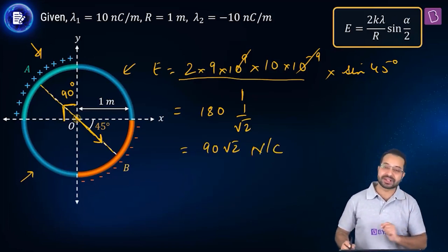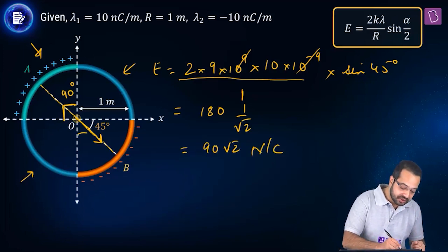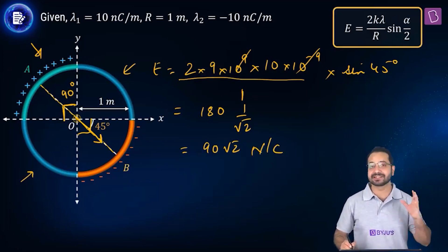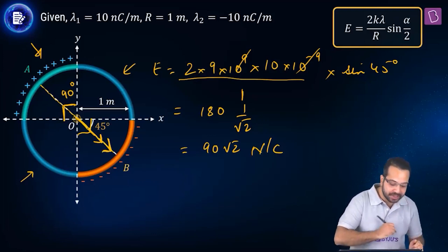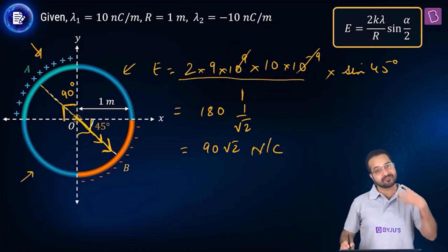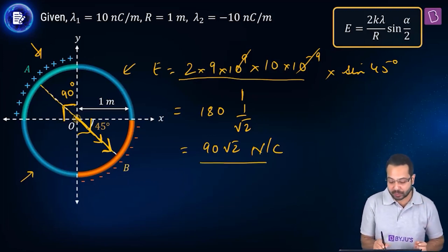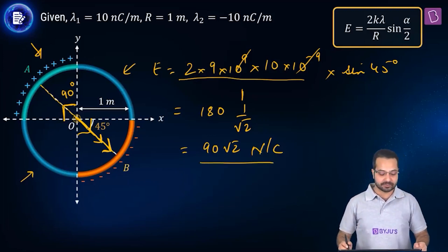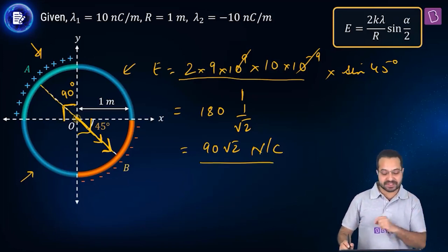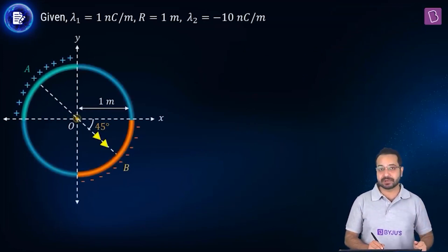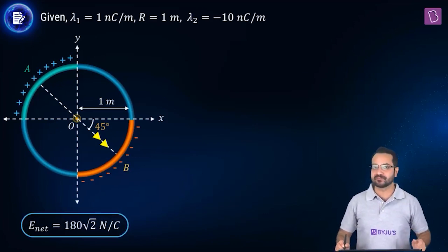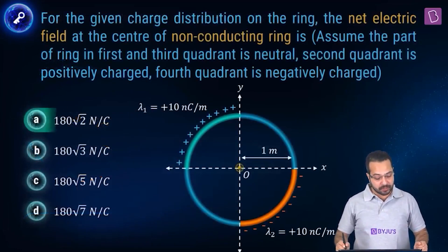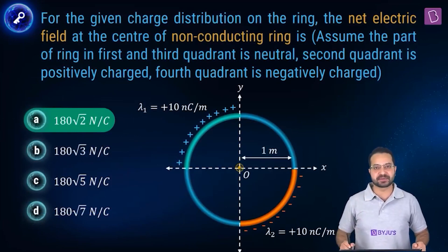For the fourth quadrant (negative charge), the field points toward that charge — in the same direction as the field from the second quadrant. The magnitude is identical by symmetry: 90√2 N/C. Adding both vectors: 90√2 + 90√2 = 180√2 N/C. Option A is correct.